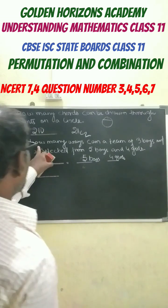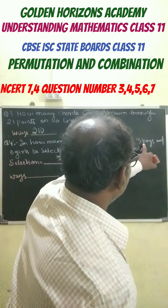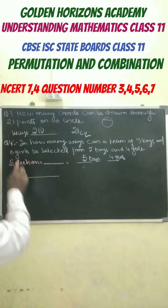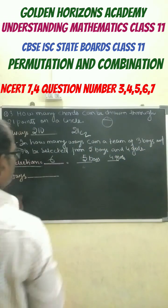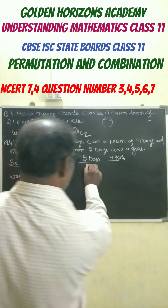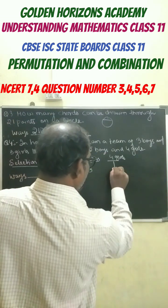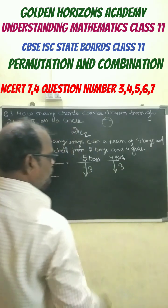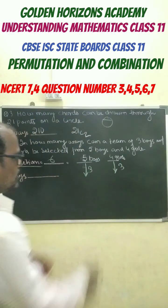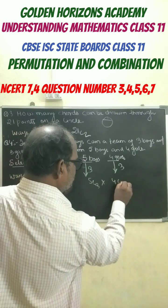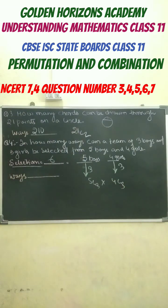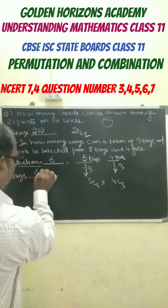Next question: in how many ways can a team of 3 boys and 3 girls be formed? Total selection should be 6. We select from 5 boys - from 5 boys you have to select 3 boys. And from 4 girls, you have to select 3 girls. So this is 5C3 times 4C3. If you do the combination, we get the answer 40 ways.